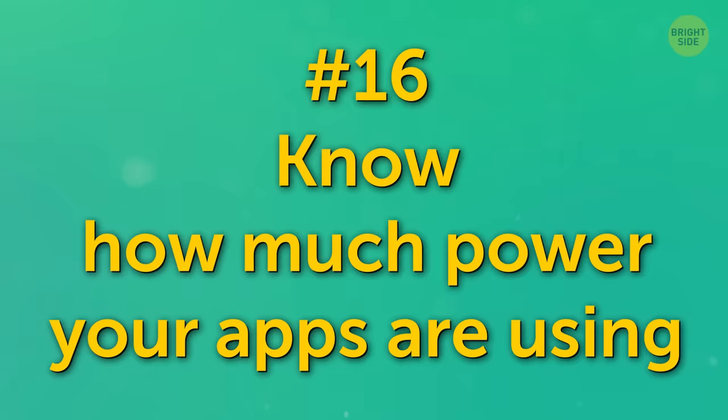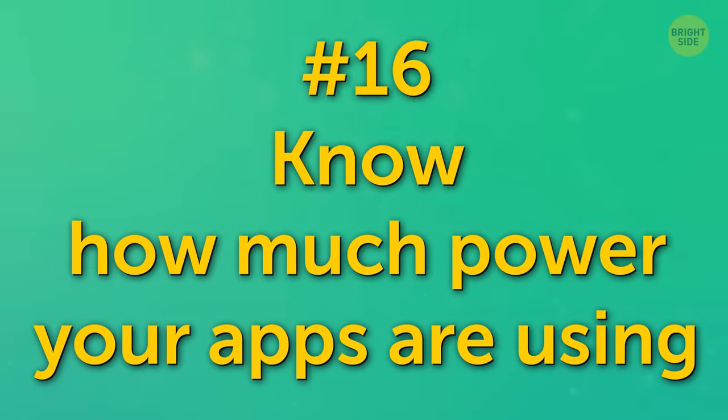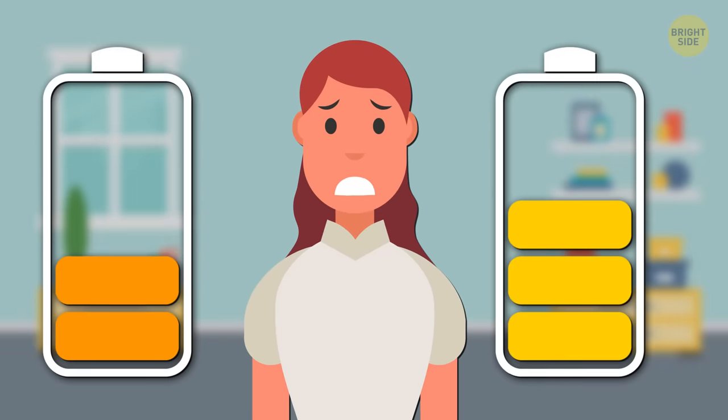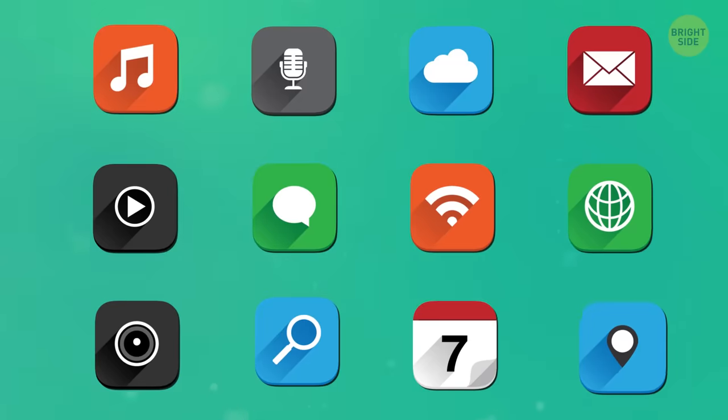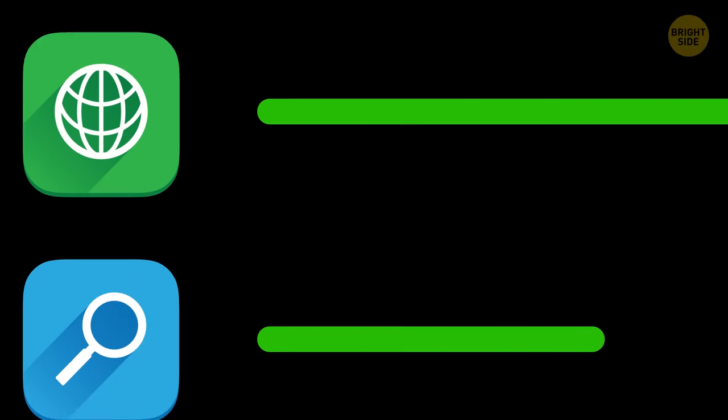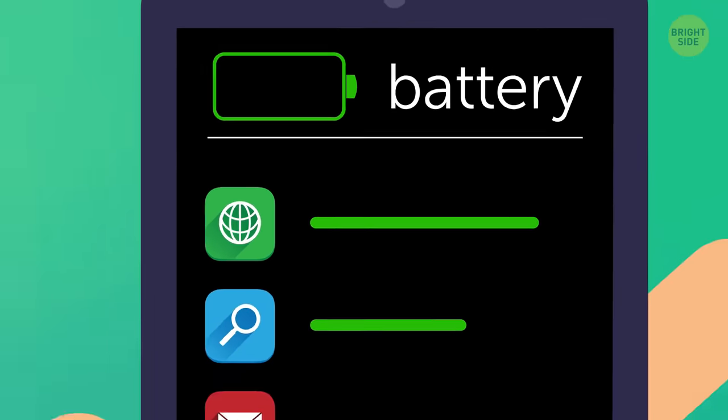Number 16. Know how much power your apps are using. If you've tried everything else and you still can't get your battery to last, it might all be the fault of one or two power-hungry apps. You can see how much power each app is using by going to the battery setting on your phone.